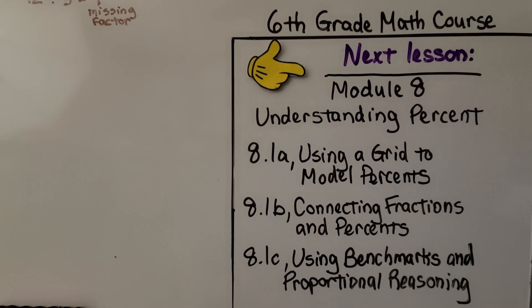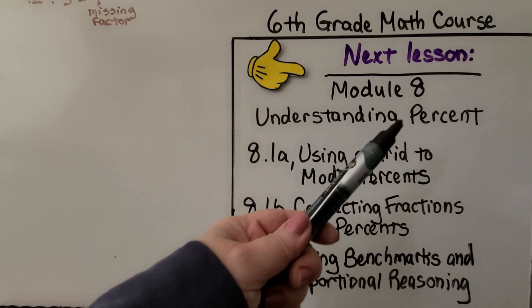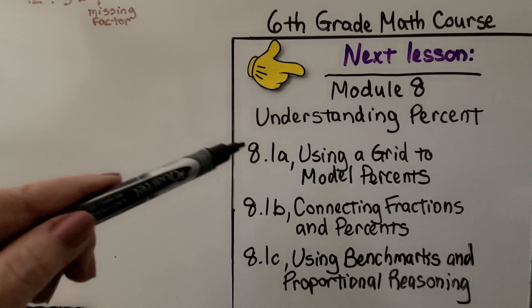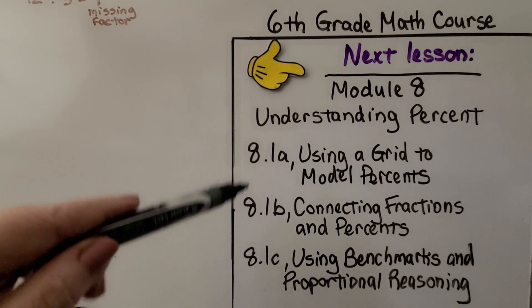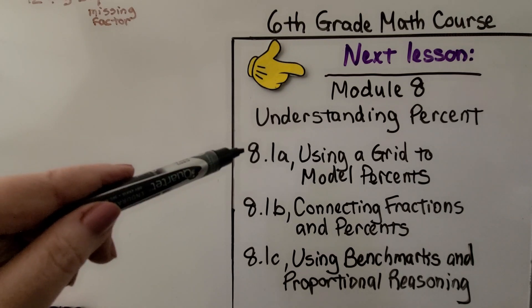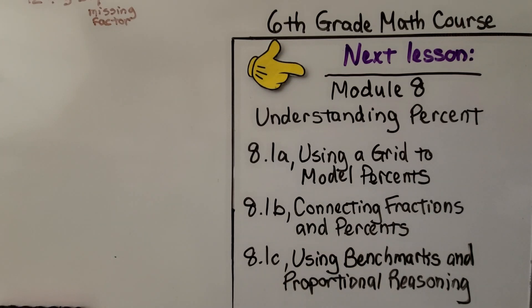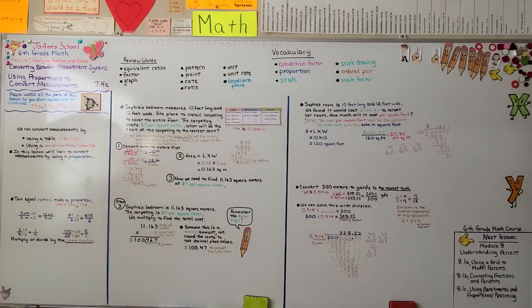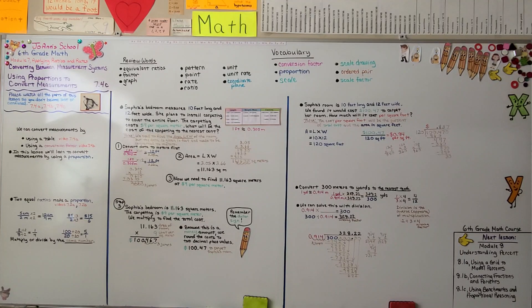So now we're finished with Module 7. I really hope you understood everything from Module 6 and 7 before we move on to Module 8, because now we're going to be learning about percents. And the next lesson is split into three parts. And the first one is using a grid to model percents. Percents are parts of 100. I hope you have a nice day, and I hope you'll join me for the next module.